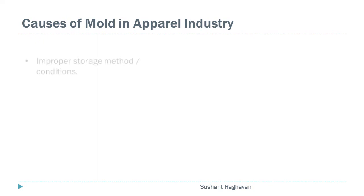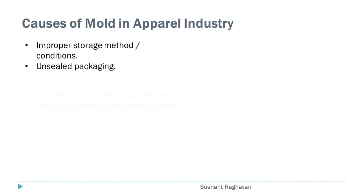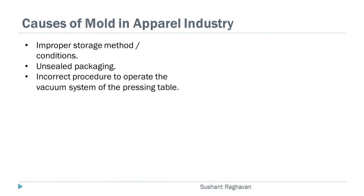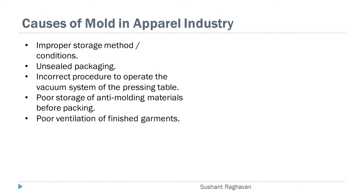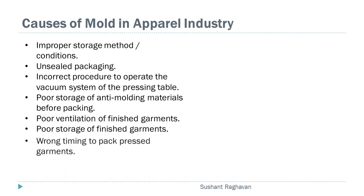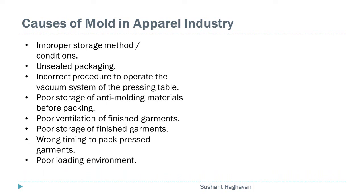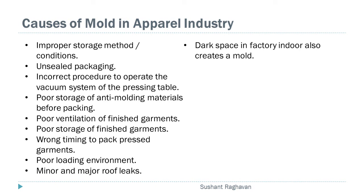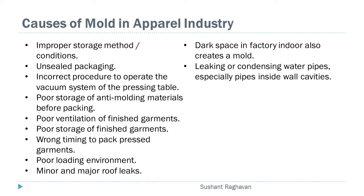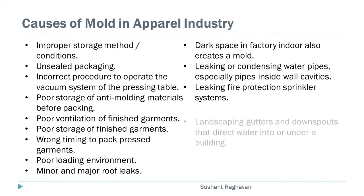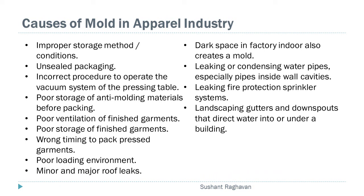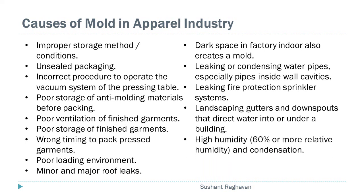Causes of mold in the apparel industry: improper storage method conditions, unsealed packaging, incorrect procedure to operate the vacuum system of the pressing table, poor storage of anti-molding materials before packing, poor ventilation of finished garments, poor storage of finished garments, wrong timing to pack fresh garments, poor loading environment. Minor and major roof leaks — dark spaces in the factory indoors also create mold. Leaking or condensing water pipes, especially pipes inside wall cavities. Leaking fire protection sprinkler systems. Landscaping gutters and downspouts that direct water into or under a building. High humidity of 60% or more, relative humidity, and condensation.